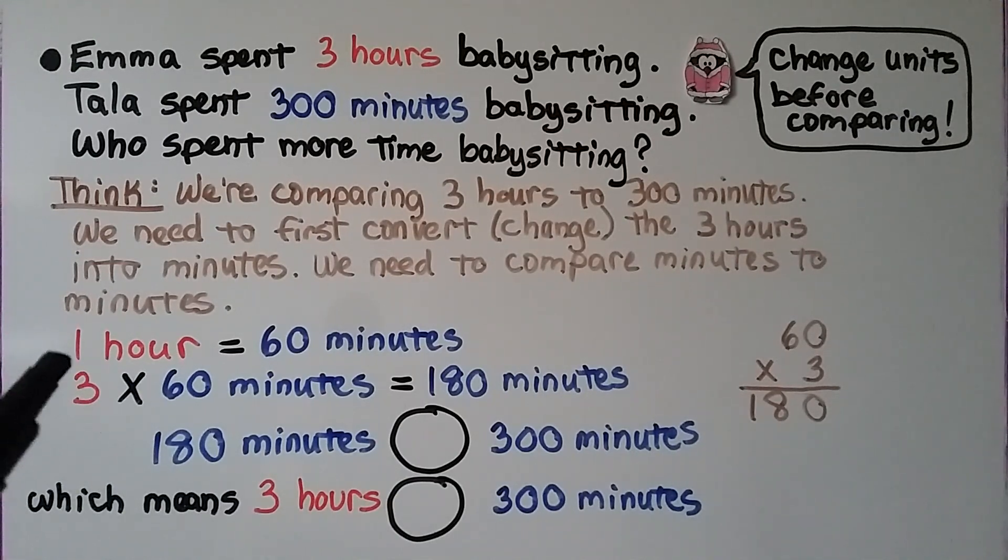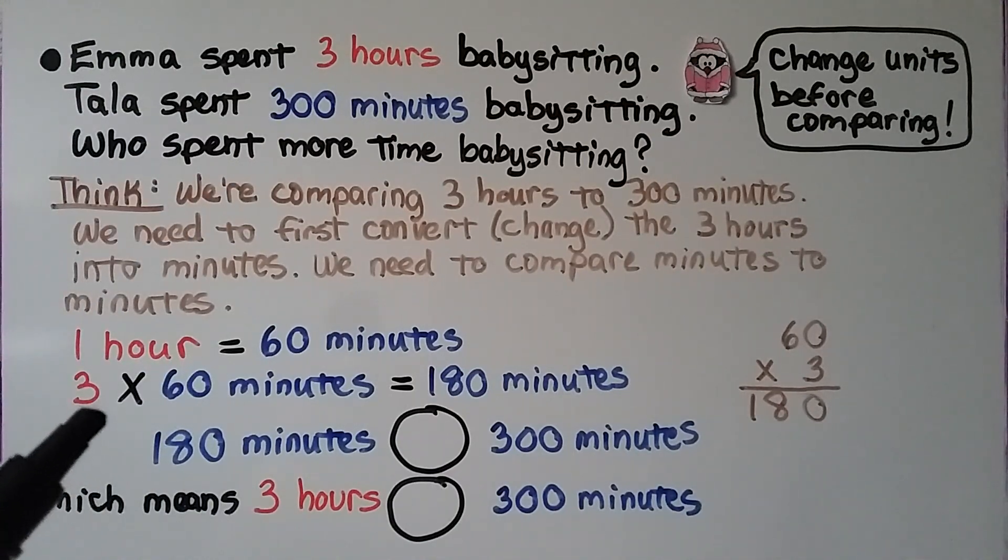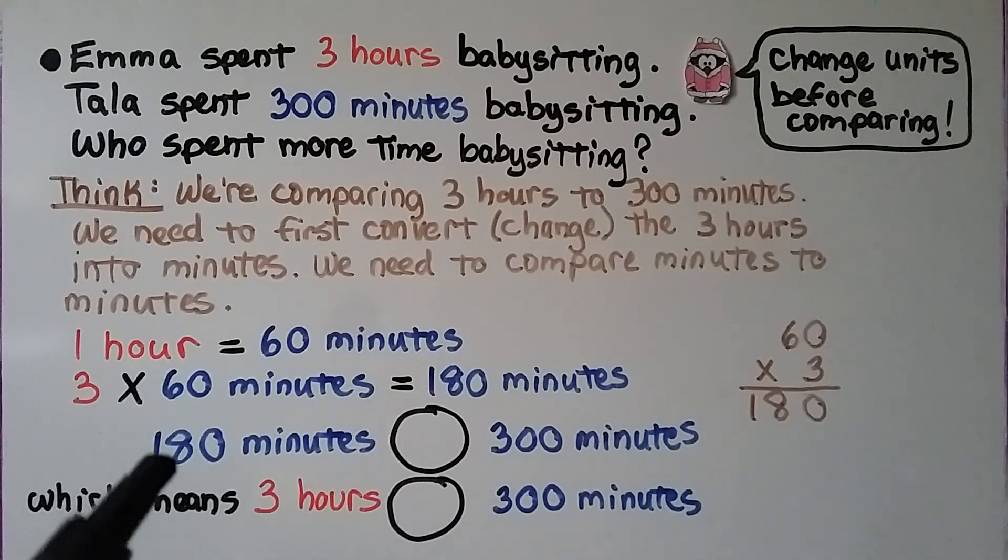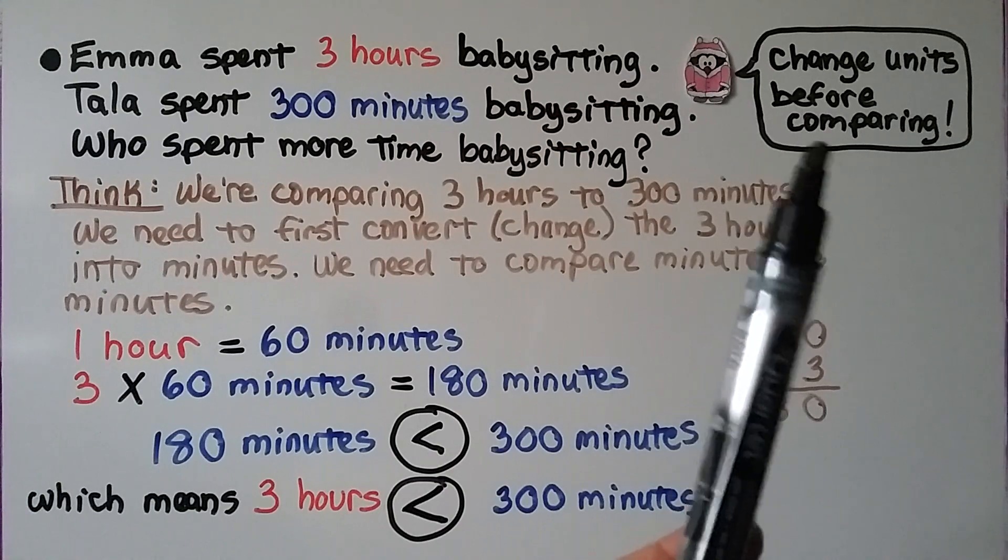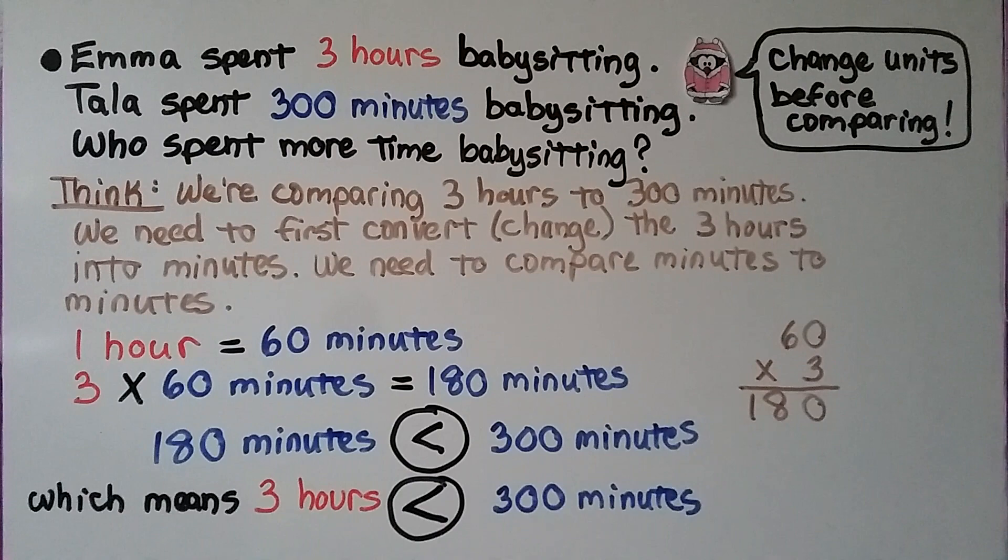We need to compare minutes to minutes. One hour is equal to 60 minutes. So because we have 3 of them, we have three 60s. We have 3 times 60 minutes. That's 180 minutes. 180 minutes is less than 300 minutes, which means 3 hours is less than 300 minutes. To compare different units, we change the units before comparing them and we change the larger units into the smaller units, the hours into the minutes.